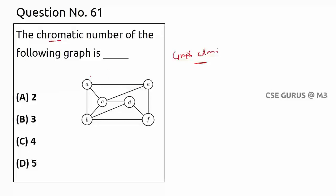First we'll see coloring in action. If I give color one here, one cannot be given to adjacent vertices. We'll mostly use the minimum number of colors — for example, giving two, three, four to successive vertices. The question is: can I use the minimum number of colors? That minimum number used to color the graph is what we call the chromatic number.